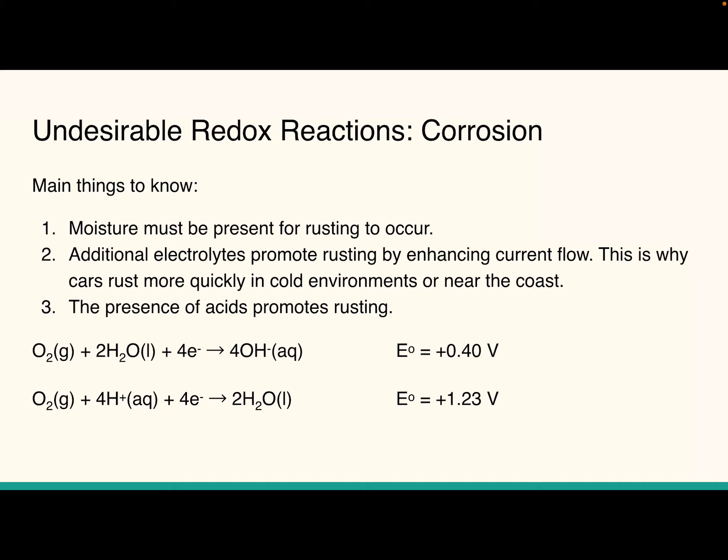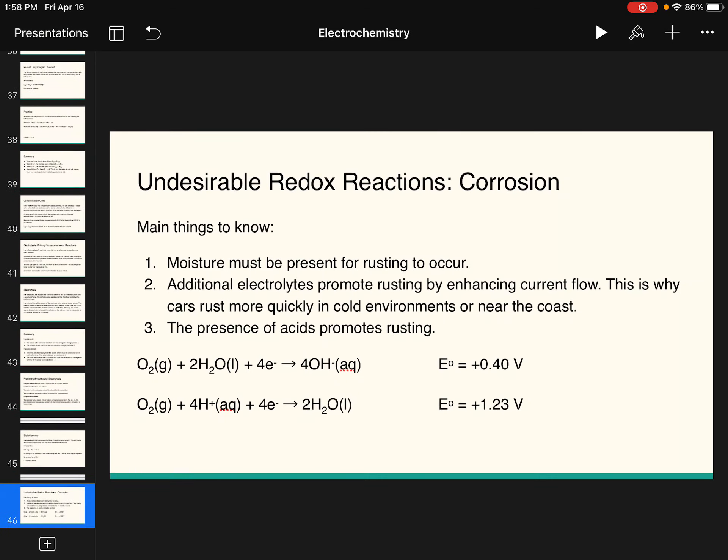Last thing is undesirable redox reactions. So we're talking about rust, corrosion. A couple things to know. Moisture has to be present for rusting to occur. You need the ions to be able to flow freely. Additional electrolytes also promote rusting by enhancing current flow. So cars are going to rust more quickly in areas that are cold or near the coast. What I mean by cold is if it snows, then they put down salt on the roads. So now you've got moisture from the snow, but you've also got electrolytes from the salt. So places like the Dakotas or Michigan or somewhere where they're getting a lot of snow, you're going to have cars that rust more quickly. And near the coast, you have salt water from the ocean that could do the same thing. Also, presence of acids promote rusting. It's pretty self-explanatory. Those are also ions. So I think that is all we got. So hopefully that helped.